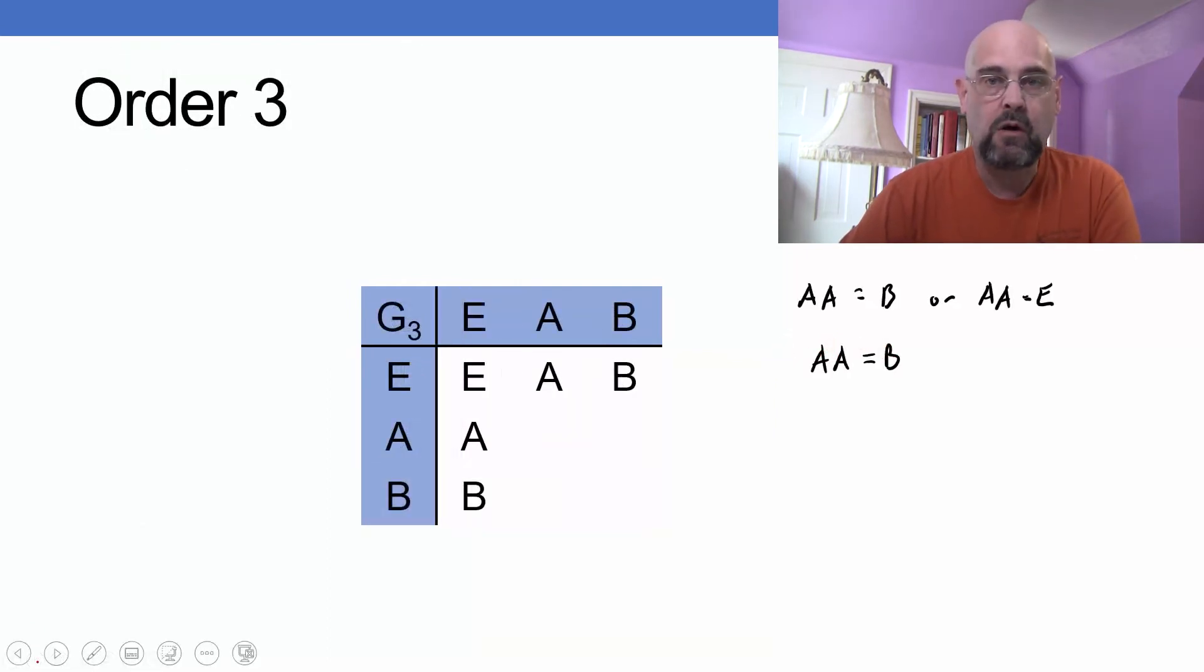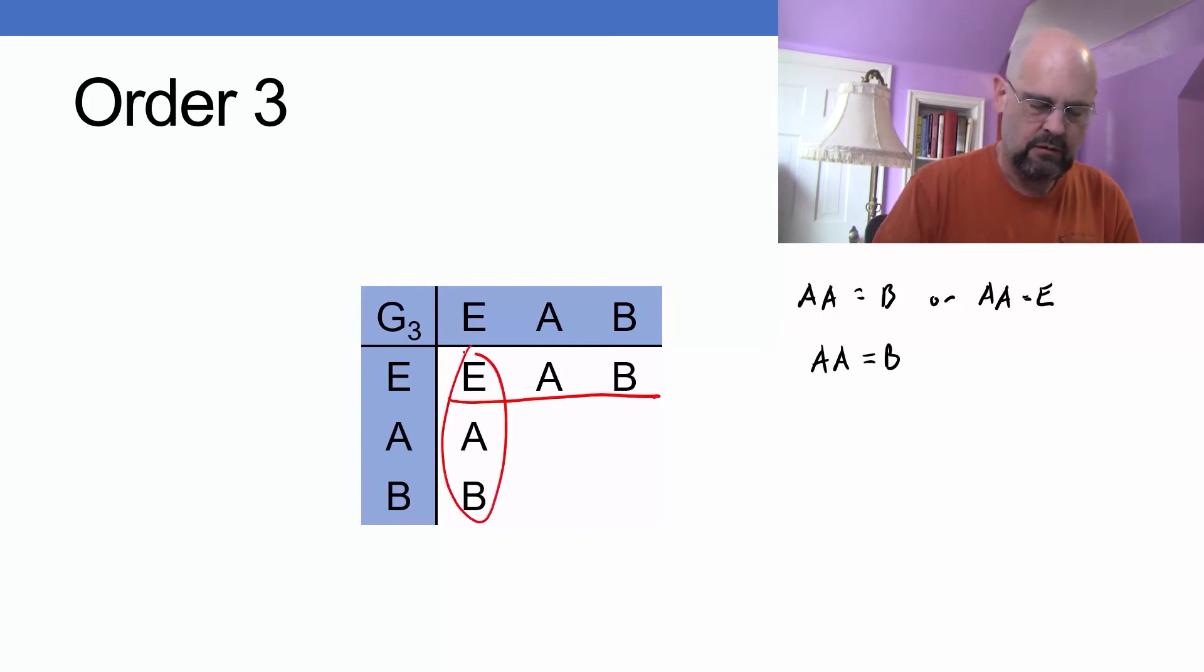Okay, let's look at order three. So order three, I have two different possibilities. First off, you can see I filled in this row and this column because they involve the identity element, so we know what the answers are to those.